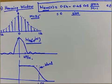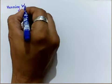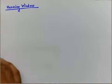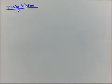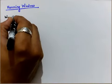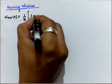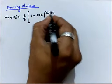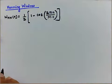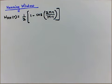Now let's proceed to the next type of window — the Hanning window. The expression is slightly different. For the Hanning window, the function is indicated as W_HN(n), and it is given as: W_HN(n) = (1/2)·(1 - cos(2πn / (M-1))). This is the function for the Hanning window.